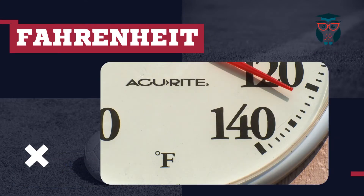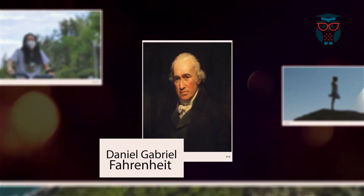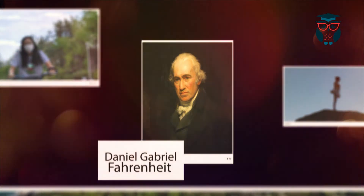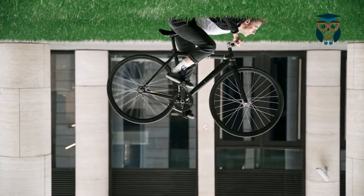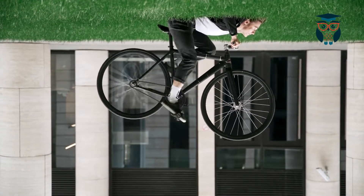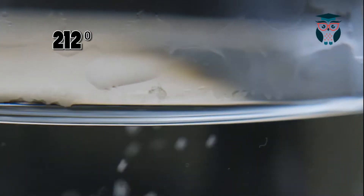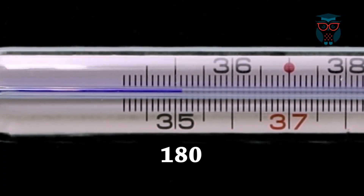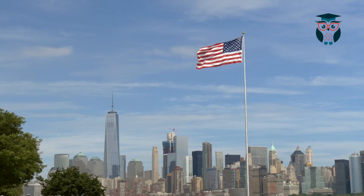Fahrenheit. The Fahrenheit temperature scale was developed by German physicist Daniel Gabriel Fahrenheit in 1742. He is best known as the inventor of the mercury thermometer in 1714. He took 32 degrees as the freezing point of water and 212 degrees as the boiling point, and divided these two points into 180 equal segments. The Fahrenheit scale is used in the United States.